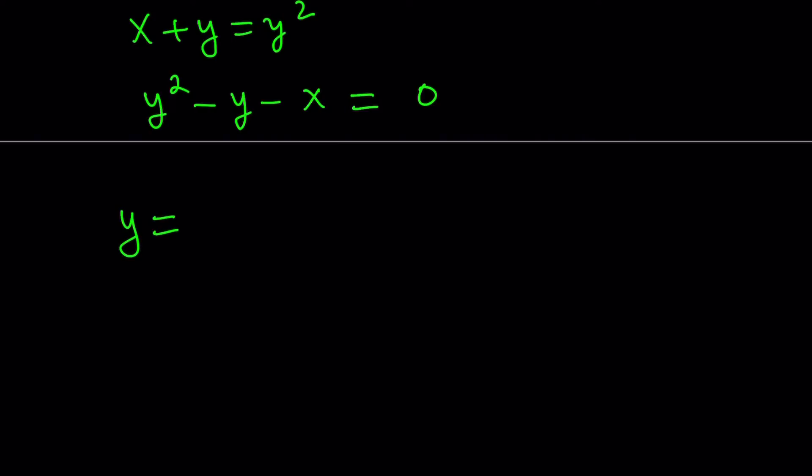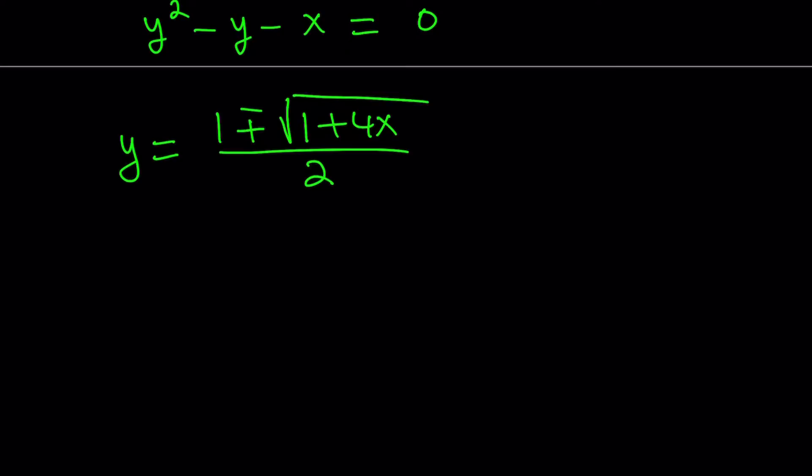So y equals from here, negative b, plus minus the square root of b squared, which is 1, minus 4ac, but c is negative x. So that's going to become positive 4x, all over 2a, which is 2. That is the quadratic formula.